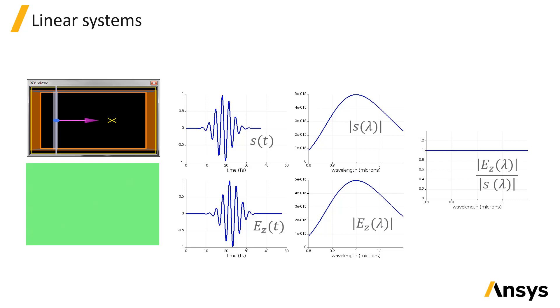We see that the electric field and the source pulse look nearly identical except for a time offset because it takes some time for the pulse to arrive at the location where the field is recorded. We can Fourier transform these quantities and plot their magnitude as a function of wavelength. Since we started with a Gaussian envelope in the time domain, we have a Gaussian shape in the frequency domain, but it appears slightly asymmetric because we are plotting it versus frequency.